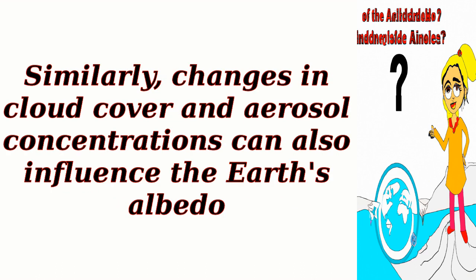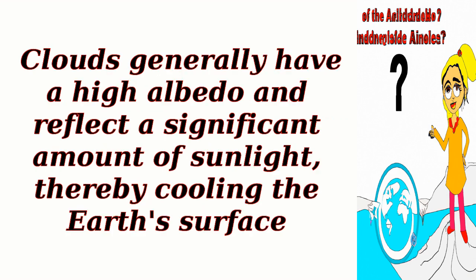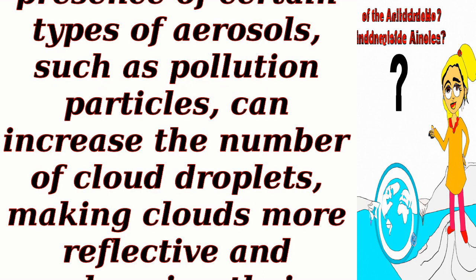Similarly, changes in cloud cover and aerosol concentrations can also influence the Earth's albedo. Clouds generally have a high albedo and reflect a significant amount of sunlight, thereby cooling the Earth's surface. However, the presence of certain types of aerosols, such as pollution particles, can increase the number of cloud droplets, making clouds more reflective and enhancing their cooling effect.